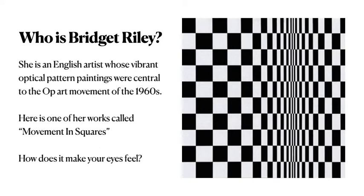Here is one of her works called Movement in Squares. How does it make your eyes feel? Are you seeing that warping, swelling, or vibration? The way she creates this illusion is by changing squares into rectangles — those squares morph into rectangles that get smaller and smaller, and then grow bigger again. So the squares only really start on the left side and then change and morph into rectangles.